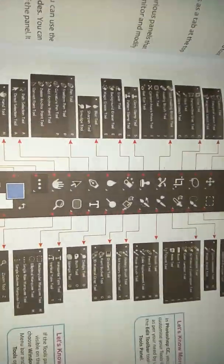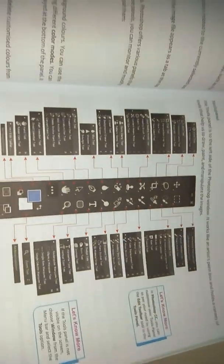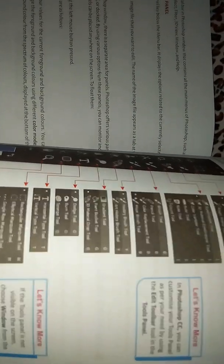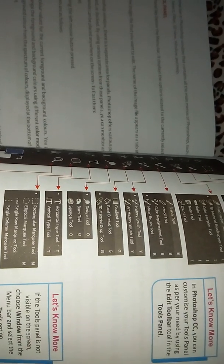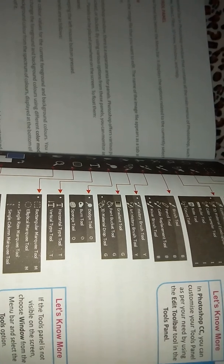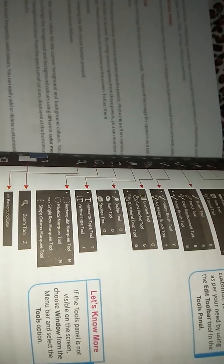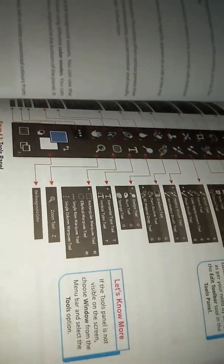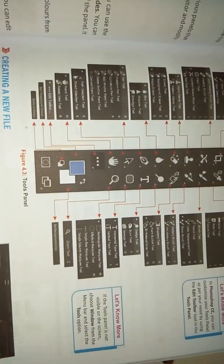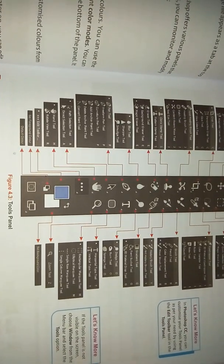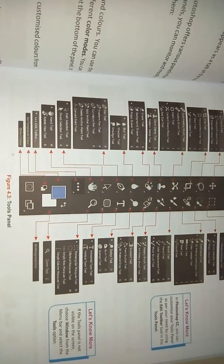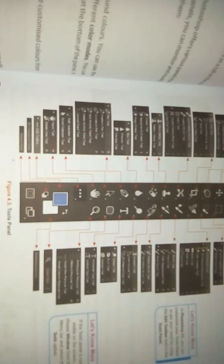In Photoshop CC, you can customize your tools panel as per your need by using the Edit Toolbar tool in the tools panel. If the tools panel is not visible on the screen, choose Window from the menu bar and select the Tool option. That's it for now — we will discuss other topics later.